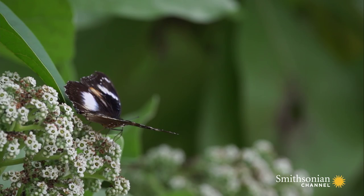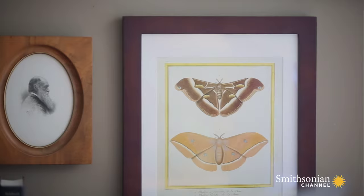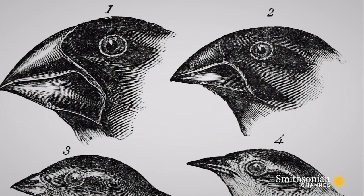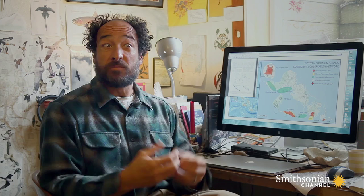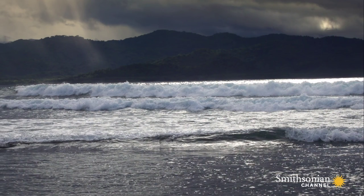Darwin explained how an existing species could adapt to its environment, but his theory was still incomplete. Darwin did this incredible job of describing how species change over time. But in his book, The Origin of Species, it sort of left a question mark about where those lines started — that is, where do species really come from?